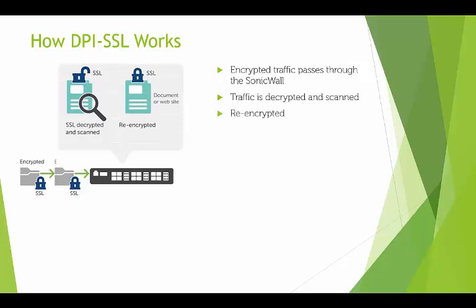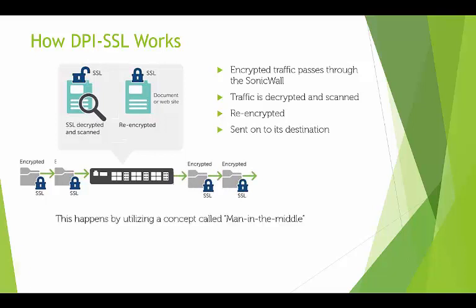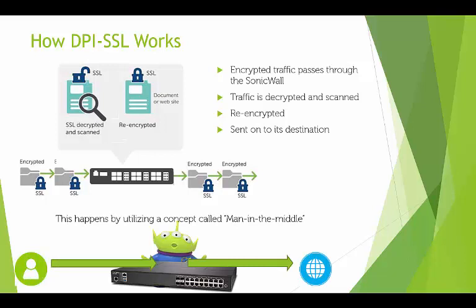It's then re-encrypted and sent on to its destination. This all happens by the concept called man-in-the-middle, where the SonicWall secretly relays the communication between two parties — the client and the server — who believe they are directly communicating with each other. Because we're using the SonicWall DPI-SSL certificate as a trusted certificate, it allows us to interject that traffic.